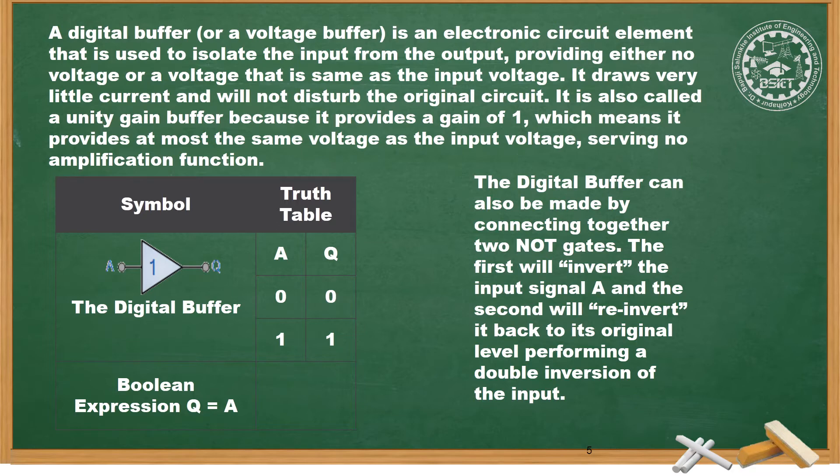The digital buffer can also be made by connecting together two NOT gates. We can obtain a digital buffer by cascading two inverters. The first will invert the input signal A, and the second will re-invert it back to its original level, performing a double inversion of the input. You can see the symbol in the diagram and truth table also.